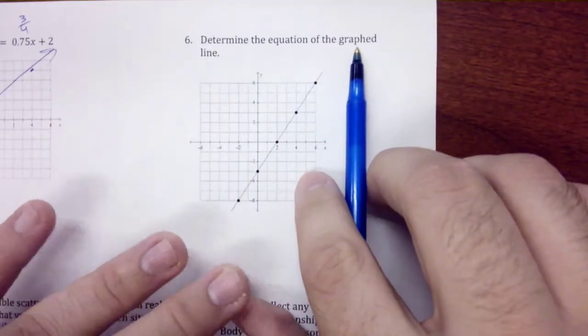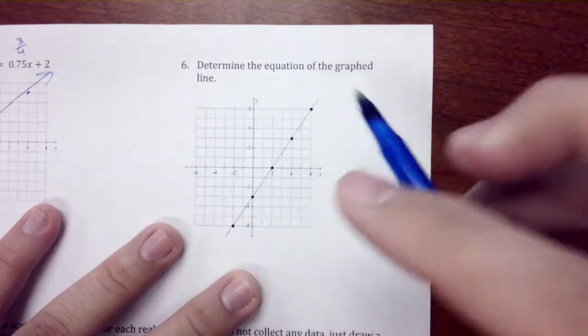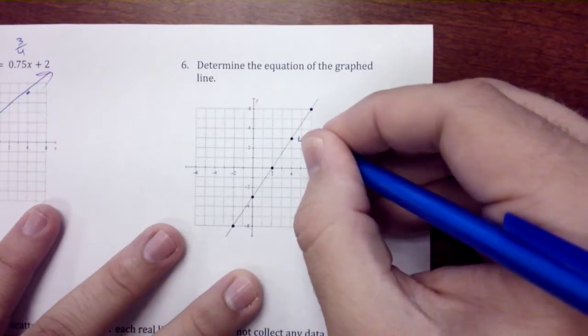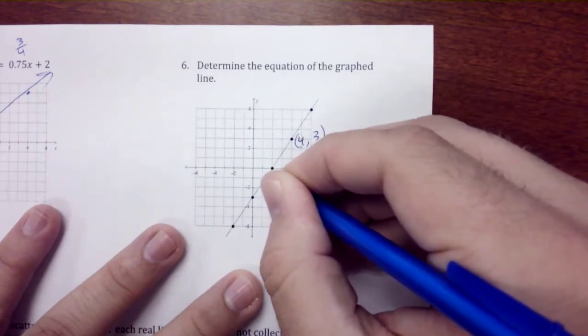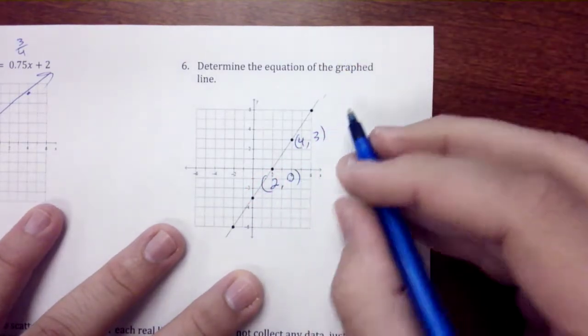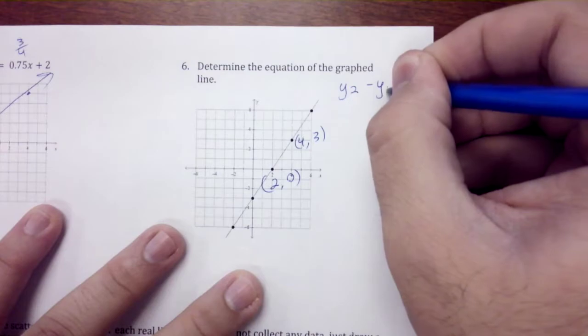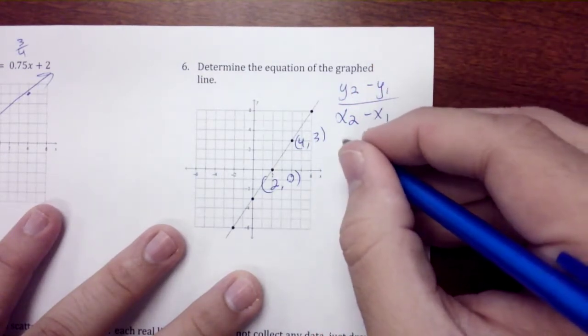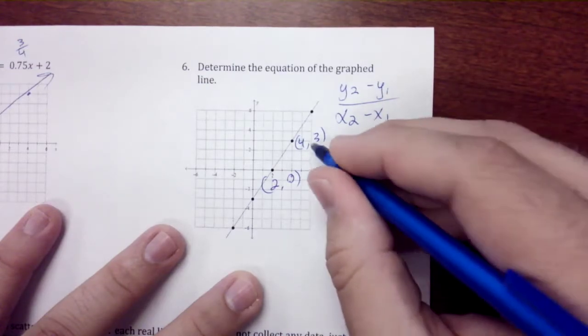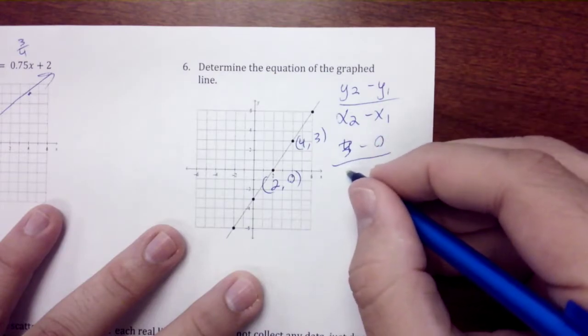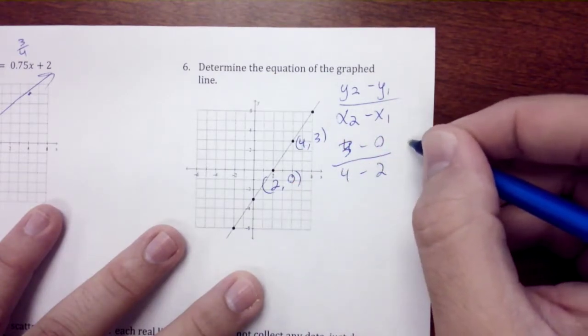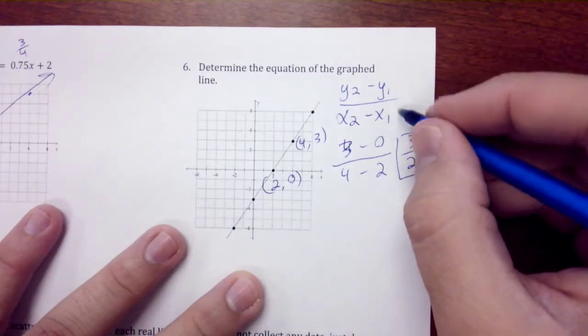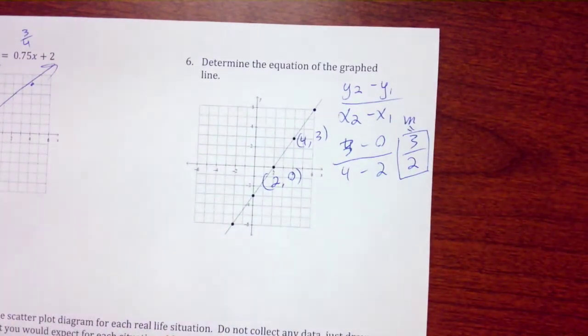Determine the equation of the graphed line. I have two points: I have (4, 3) and (2, 0). To determine my slope: (y₂ - y₁)/(x₂ - x₁), so we have (3 - 0)/(4 - 2), giving me a slope of 3/2. So my m = 3/2.